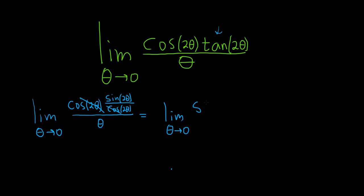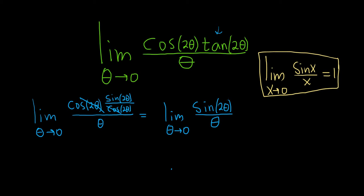of the sine of 2 theta over theta. All right, so there is a formula that appears to be useful here. If you take the limit as x approaches 0 of sine x over x, this is equal to 1. This is a super important formula that can be used in this problem.